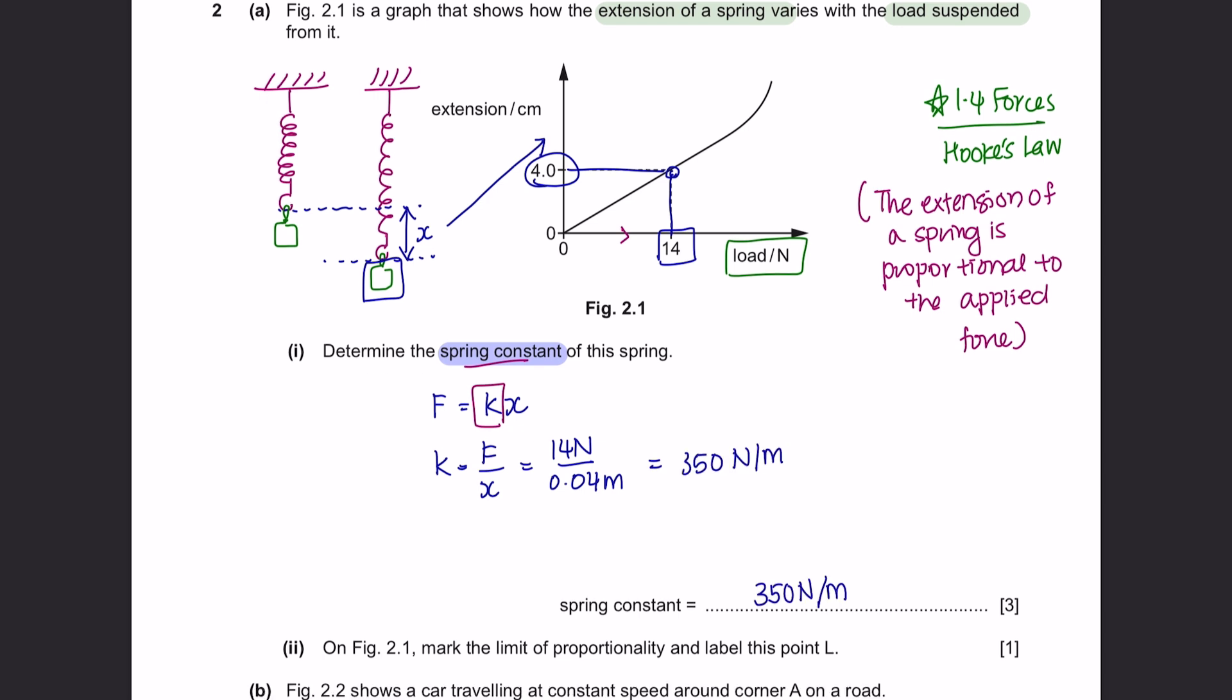Part 2. On figure 2.1, mark the limit of proportionality and label this point as L. Your graph should be linear like this. However, when an object has stretched to a point where it cannot return to its original shape, it has exited the limit of proportionality, and it will be this point over here when the graph no longer obeys Hooke's law. So you can label this point as L.